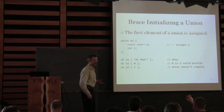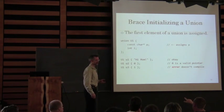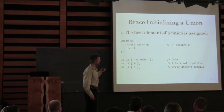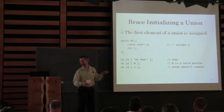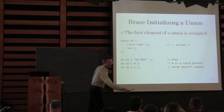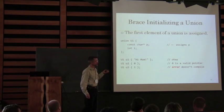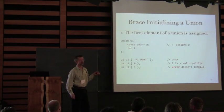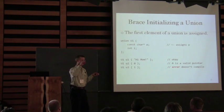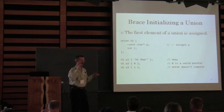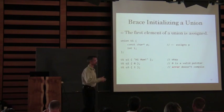If you empty-initialize with empty brackets, you're going to get a null pointer or zero. If you give empty braces, that's equivalent to what you get with empty parentheses today, which will zero-initialize an integer, float, or double, and give a null pointer to a pointer type.